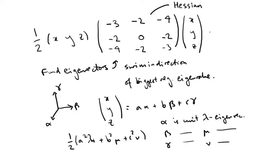So, suppose lambda is the biggest of these three, the biggest negative of these three, then clearly moving in this direction, this alpha direction, will decrease this function faster than moving in any of the other directions.